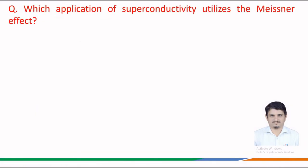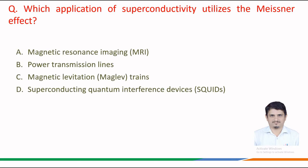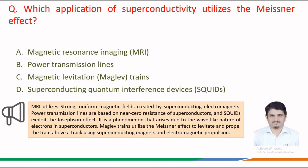Next question: which application of superconductivity utilizes the Meissner effect? The given options are: option a, magnetic resonance imaging (MRI); option b, power transmission lines; option c, magnetic levitation — maglev trains; and option d, superconducting quantum interference devices (SQUIDs).